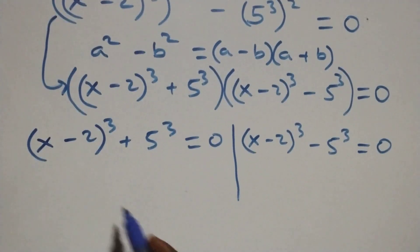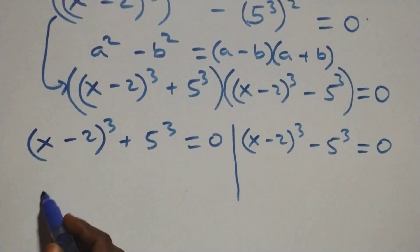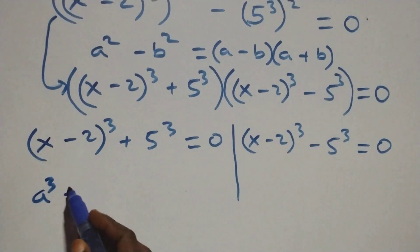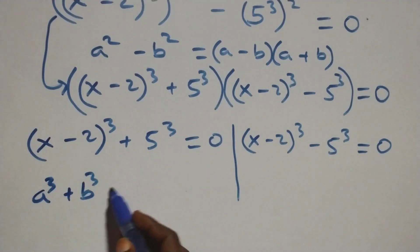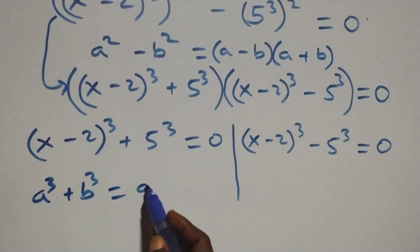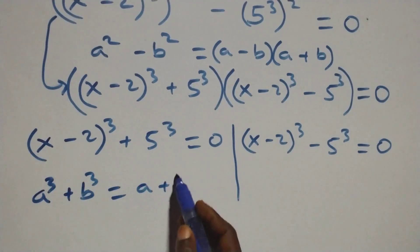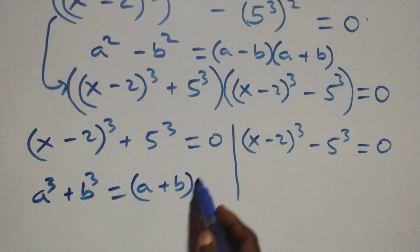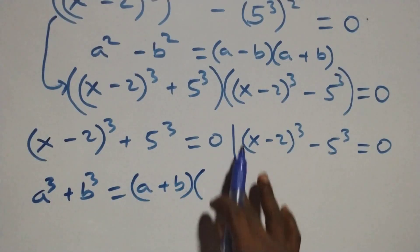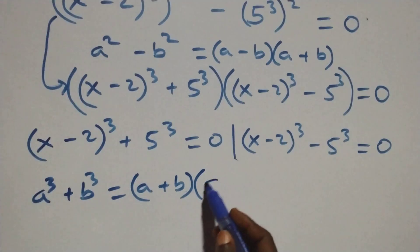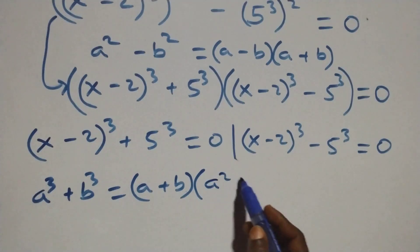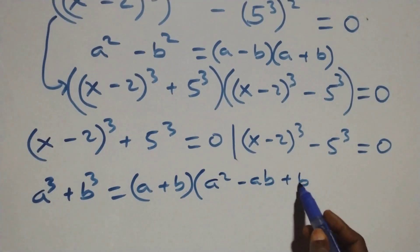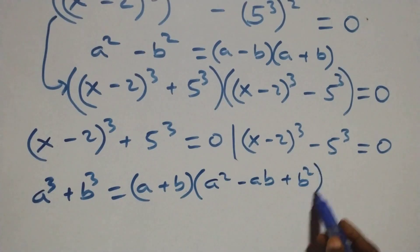For the first case, this follows the identity a cubed plus b cubed, which equals (a plus b) times (a squared minus ab plus b squared).